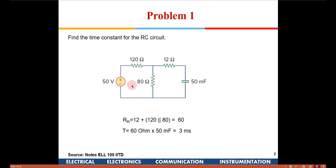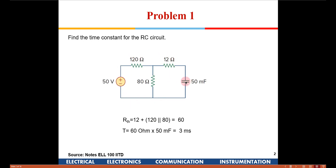Now, we need to find out R_TH. To find R_TH, we look from the capacitor side into the circuit to find the equivalent resistance and remove the voltage sources and current sources. For the voltage source, we replace it with a short circuit. Looking from the capacitor side, it will be 120 ohms in parallel with 80 ohms, which is then in series with 12 ohms. So 12 ohms in series with the parallel combination of 120 and 80, giving us 60 ohms — that is the net resistance in series with the capacitor.